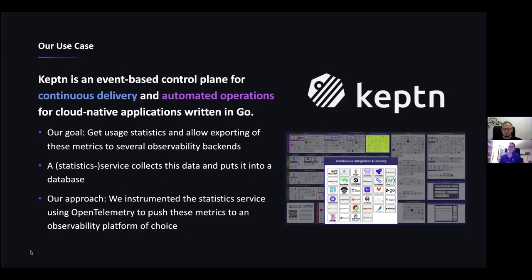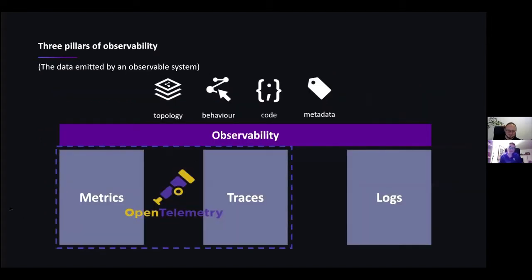Observability refers to the telemetry data produced by software services. Metrics, traces, and logs have been coined as the three pillars of observability. Projects like OpenTelemetry, which currently focuses on traces and metrics, promote the standardization of telemetry data collection, and built-in observability will soon become a must-have feature for cloud-native software. But in the context of highly dynamic and large-scale enterprise systems, just looking at these three pillars alone without meaningful relationships between them is not enough to get actionable answers and for identifying, for example, the root cause of a problem.